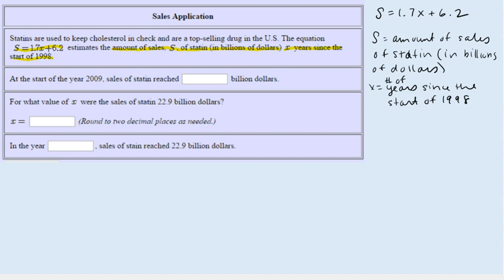To make sense of this equation, if we put in a value for X, that represents the number of years since 1998, and it will be 1.7 times that amount. Remember what we learned about variable amounts and fixed amounts. This amount varies depending on the year, so it's $1.7 billion per year plus $6.2 billion. This is the fixed amount, which is the value at 1998.